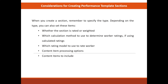Depending on the type, you can also set these items: whether the section is rated or weighted, which calculation method to use to determine worker rating if using calculated rating, and which rating model to use to rate workers, and content item processing options and content items to include. After you create the section, they are available for you to use in the performance template. In the performance template, you can create sections or select and edit previously created sections.